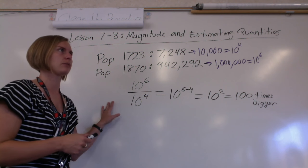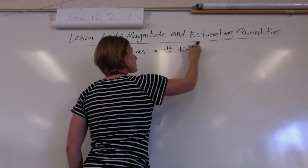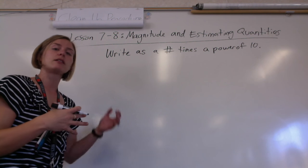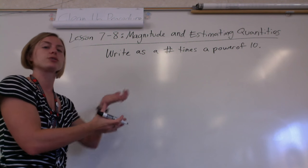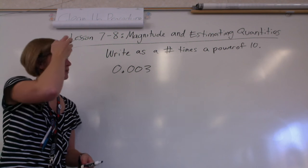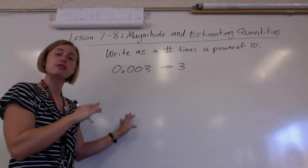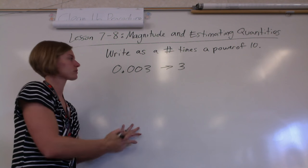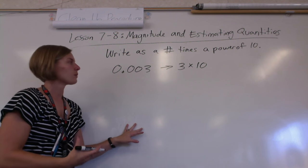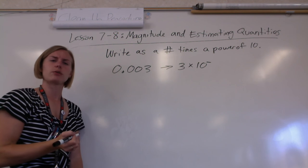So we're going to convert some numbers to being written as a number times a power of 10. What if we had 0.003? We take that three — we can't just get rid of it. We're not making an estimate, we're actually converting how it looks. So we've got a 3, and we know we need a times a power of 10. It needs to be a negative power because this is a decimal. The power of 10 was one less than the amount of zeros, so there are two zeros — one less gives us negative 3.